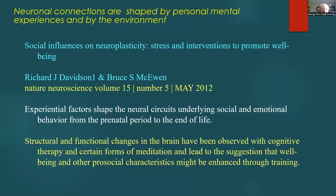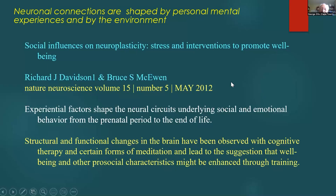Neuroconnections are shaped by personal mental experiences and by the environment. An article on social influences on neuroplasticity by Davidson and McEwen in Nature Neuroscience states that experiential factors shape neural circuits underlying social and emotional behavior from the prenatal period to the end of life — this is the downward causation I'm talking about. Structural and functional changes in the brain have been observed with cognitive therapy and certain forms of meditation. In other words, you can change your own neural connections through cognitive therapy and meditation — in fact, every time you learn anything, you're changing your neural connections.